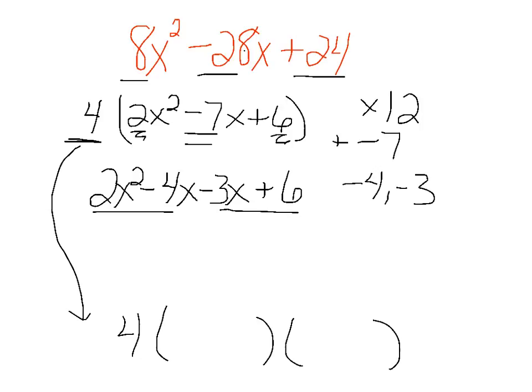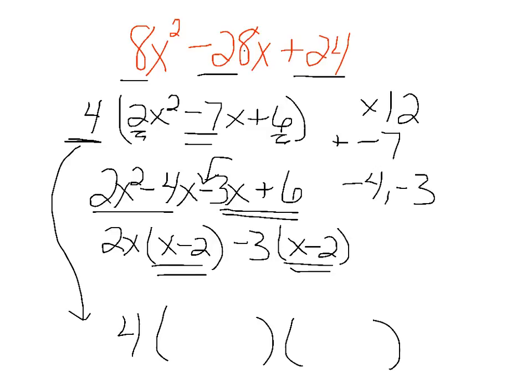For my quadratic up here, I'm going to factor 2x out of the first two terms, leaving me x minus 2. I'm going to factor a negative 3 out of those second two terms. Always factor a negative out if that term's negative. That'll leave me with an x minus 2, which is a perfect match.